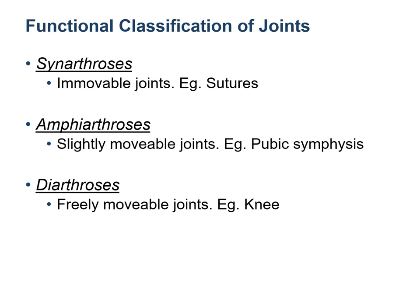There are three functional classes of joints. Synarthrosis means immovable joints — examples are sutures. Amphiarthrosis means joints that allow some motion — example the pubic symphysis. Diarthrosis are freely movable joints — for example the knee joint.